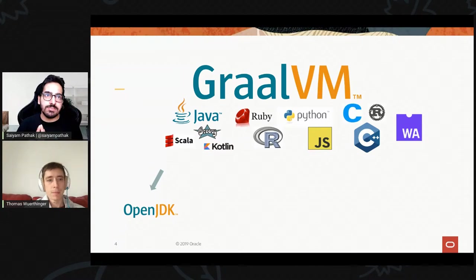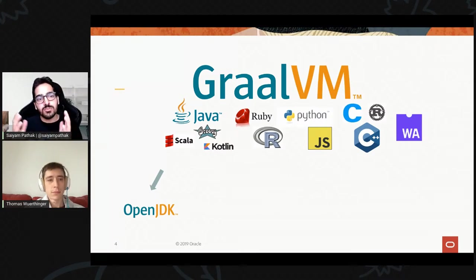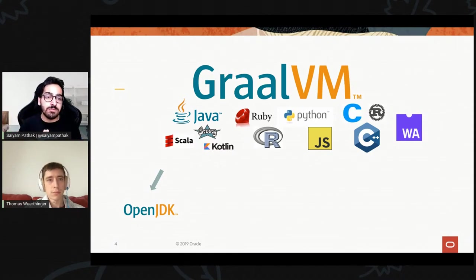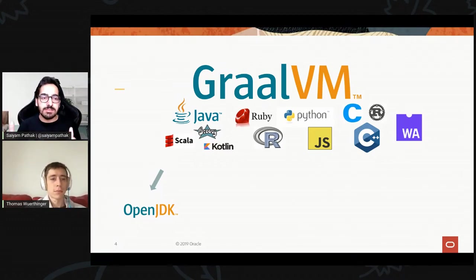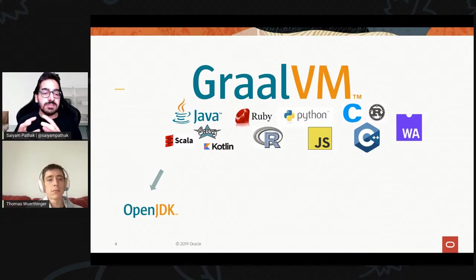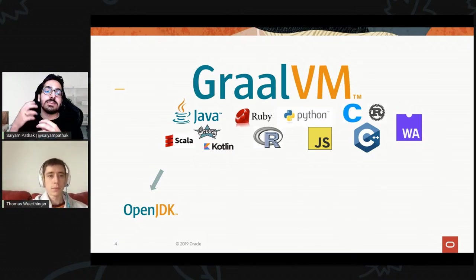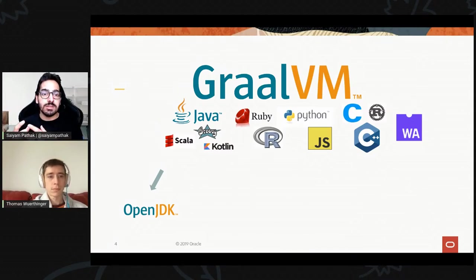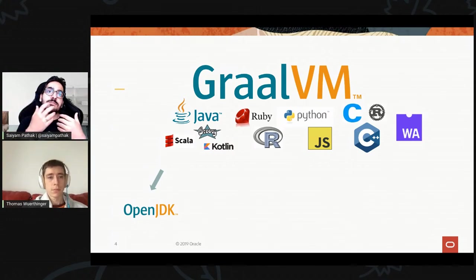On a high level, GraalVM means I can write code in the language I'm comfortable with but still use a very good module that already exists in some other language — directly inside my code, without writing a separate web service. We now live in the world of microservices, but with GraalVM it's still one single app and single service, and within that you can call functions or use complete modules from other supported languages.